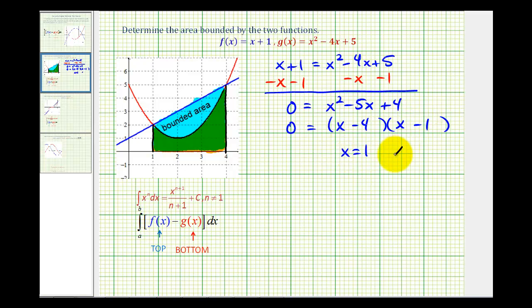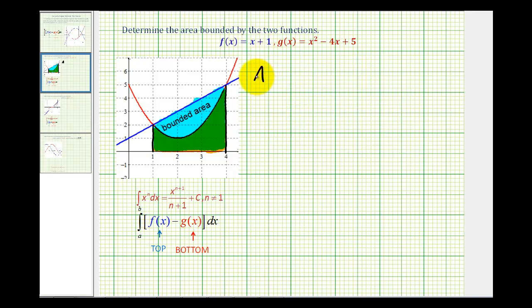So x equals 1 and x equals 4. So this does match with our graph that we'll integrate on the interval from 1 to 4. Let's go ahead and set up our definite integral. The area of the bounded region is going to be equal to the definite integral from 1 to 4 of the top function which is x plus 1 minus the bottom function which is x squared minus 4x plus 5, integrated with respect to x.